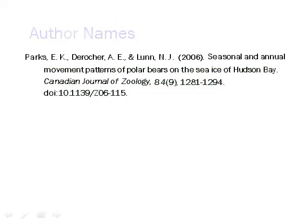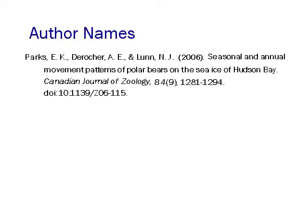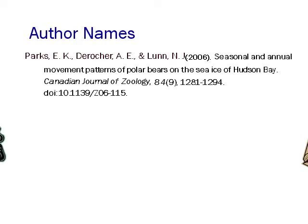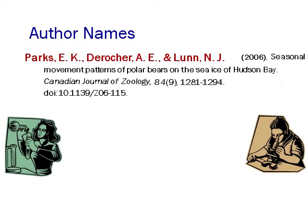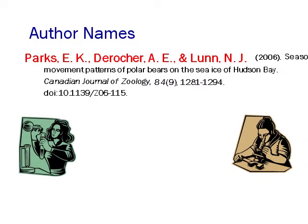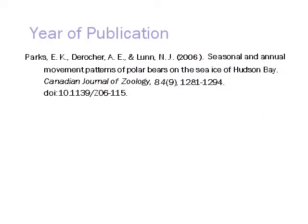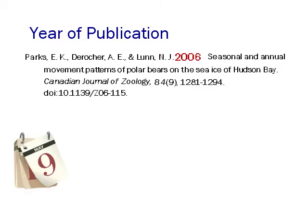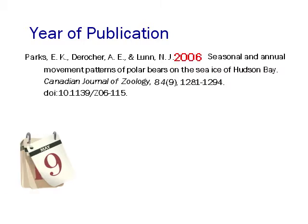The citation always begins with the author names. As you can see, they are written in reverse order — last name first — and instead of given names, the author's initials are used. The year of publication appears after the author's names and is placed in parentheses.